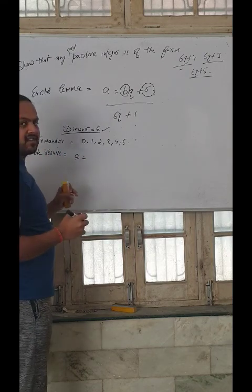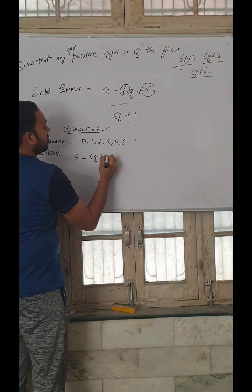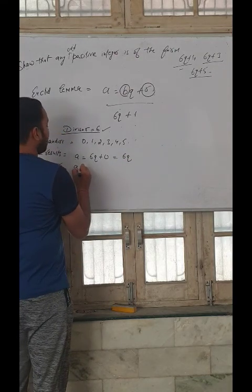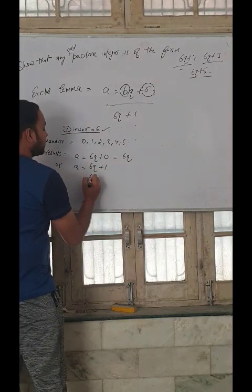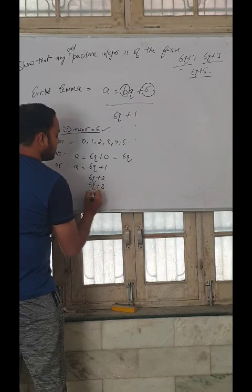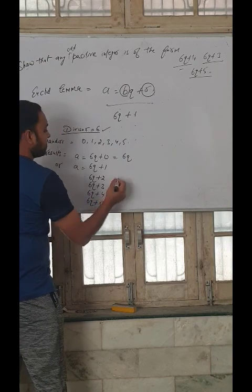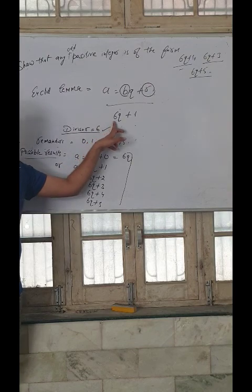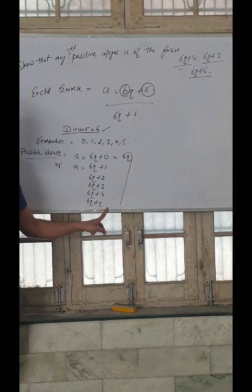a is equal to, b's value is 6, so it can be 6q plus 0 which means 6q, or our result can be 6q plus 1, 6q plus 2, 6q plus 3, 6q plus 4, and 6q plus 5. These are our possible results if our divisor is 6.